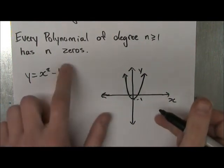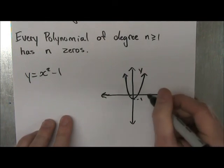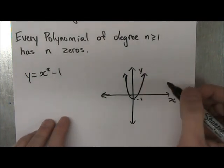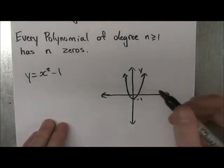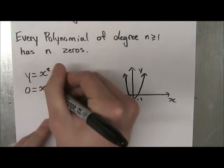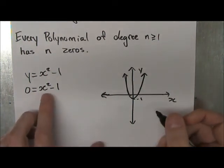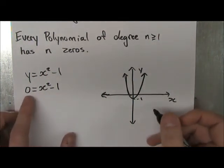Now what a zero is, is that whenever you're on this x-axis, y is equal to 0, and that's where the name comes from. So when y equals 0, x squared minus 1, you want to find what values of x will make it so that y equals 0.